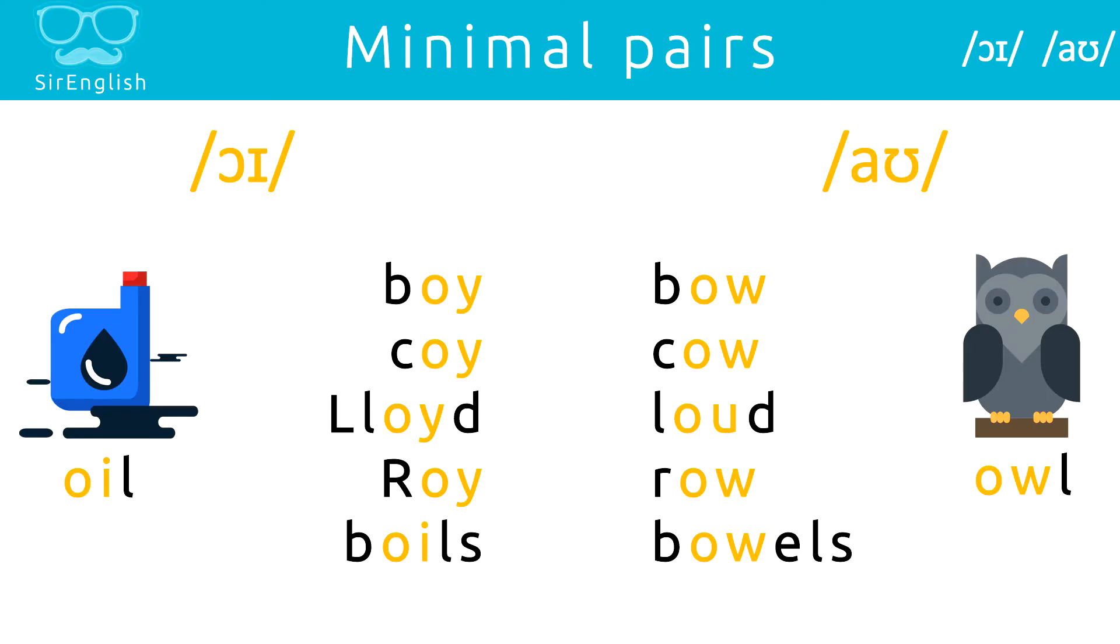Let's look at the minimal pairs. This will make the two sounds a lot clearer for you. So, on the left, we have the words containing OY and on the right, we have the words containing OW. So, listen to each pair and repeat them after me.